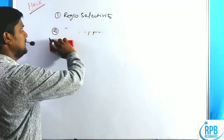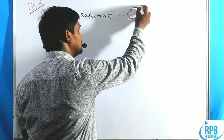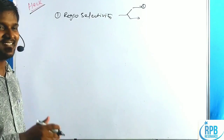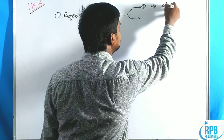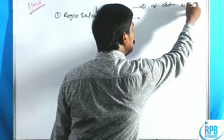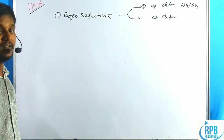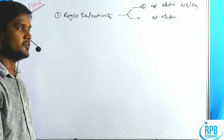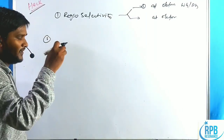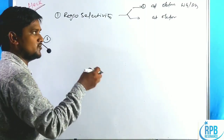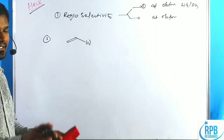Let us discuss regioselectivity one by one. Regioselectivity of olefins depends on whether the substituent is an electron-withdrawing group or an electron-donating group, and where the attack occurs on the olefin position with different stereochemical aspects.